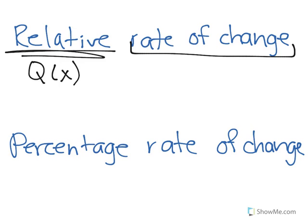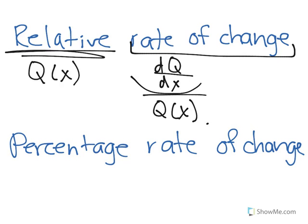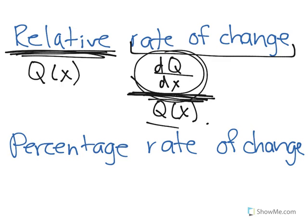The relative rate of change of that function is dQ/dx over Q(x). It means you are getting the derivative dQ/dx relative to the function itself. So what is the derivative relative to the original function? That's what relative rate of change means.